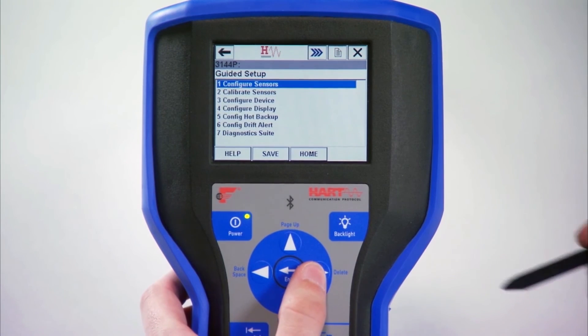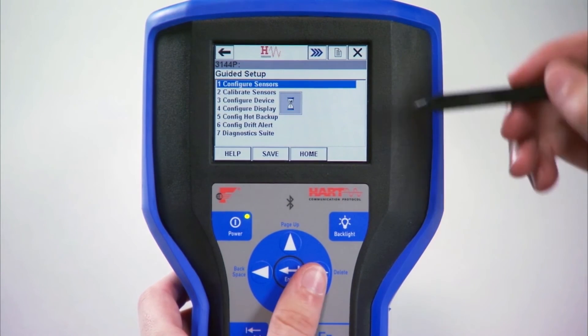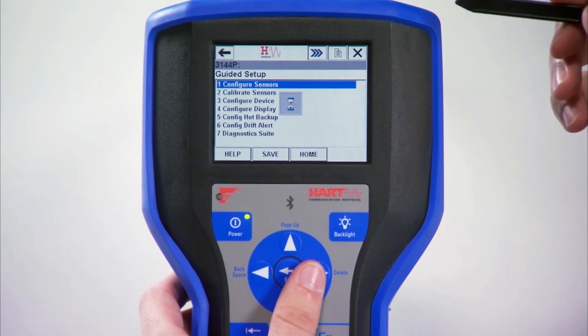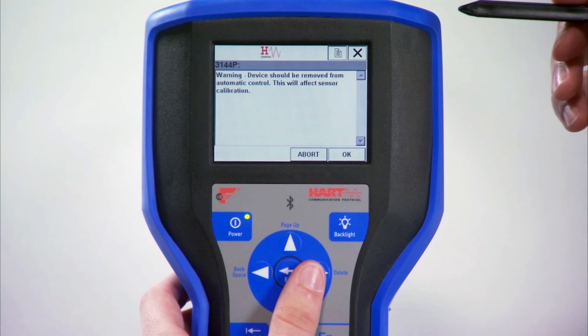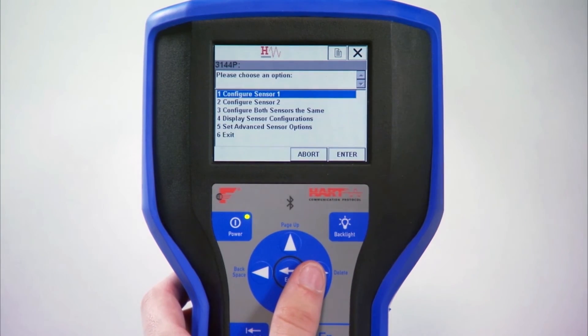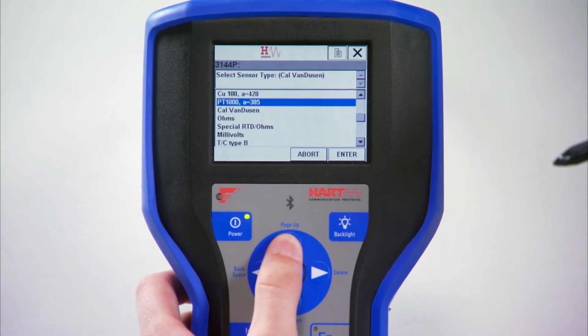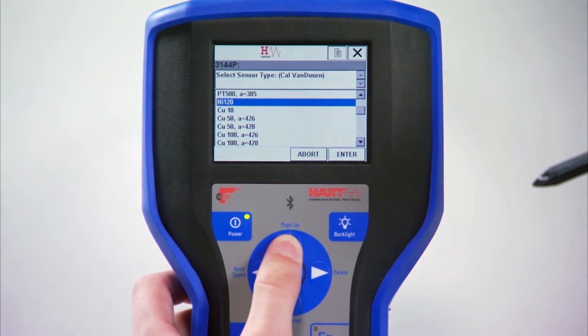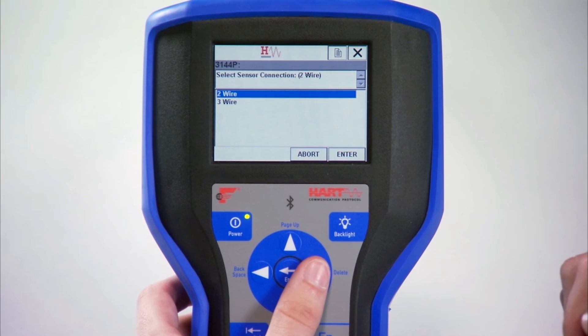A warning screen appears, explaining that the device must be removed from automatic control. Press OK. Then choose Configure Sensor 1 and press Enter. Scroll through the list to find the sensor type of your attached sensor and press Enter. If you selected an RTD, choose the correct number of wires and press Enter.